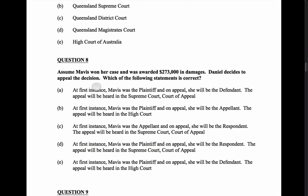Question 8. Assume Mavis won her case and was awarded $273,000 in damages. Daniel decides to appeal. Which of the following is true? Option: at first instance, Mavis was the plaintiff, and on appeal she will be the defendant. Well, that's not true, because the defendant title never changes — what she becomes is the respondent. So that can't be true.